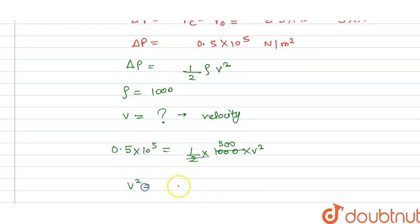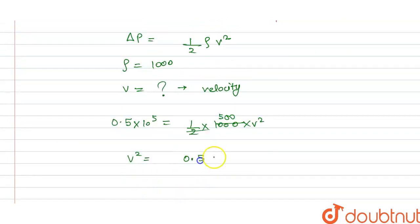So we get v² = (0.5 × 10^5)/500. Simplifying: v² = 0.1 × 10^3, which we can write as 10².